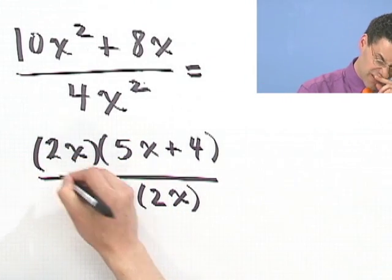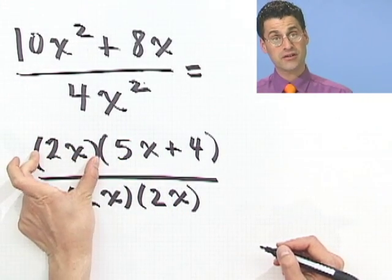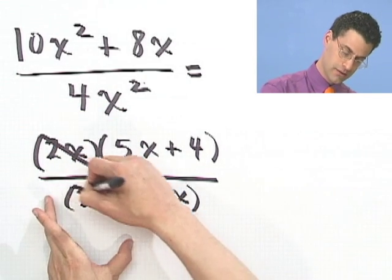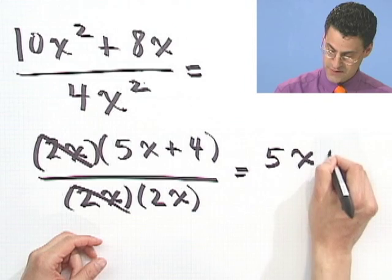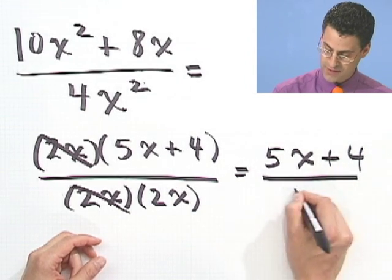Well, now I see this factor. 2x factor on top, 2x factor on the bottom. I can cancel away. And I'm left with just 5x plus 4, all divided by 2x.